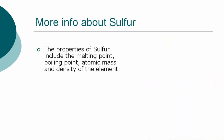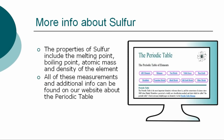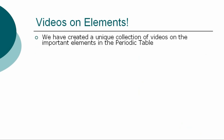The properties of sulfur are classified by many other factors, including the melting point, boiling point, atomic mass, and density of the element. All of these precise measurements, together with additional facts and information, can be found on our website. So ends our simple guide to the element sulfur. We have created a unique collection of videos on many other important elements, developed to enable chemistry students to gain a fast overview of the properties of each of the elements together with their discovery and history.